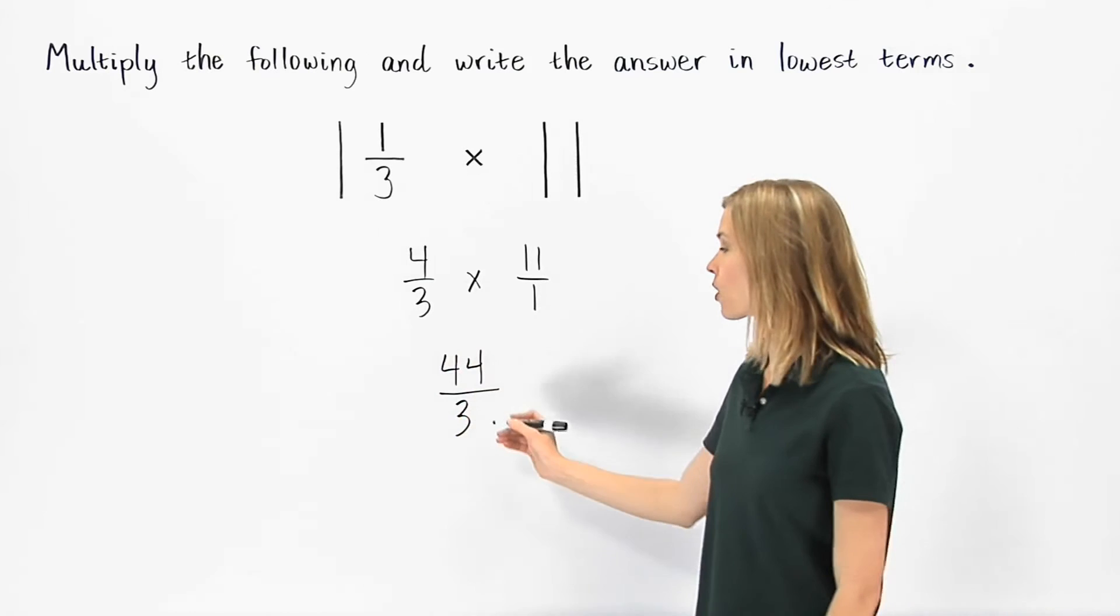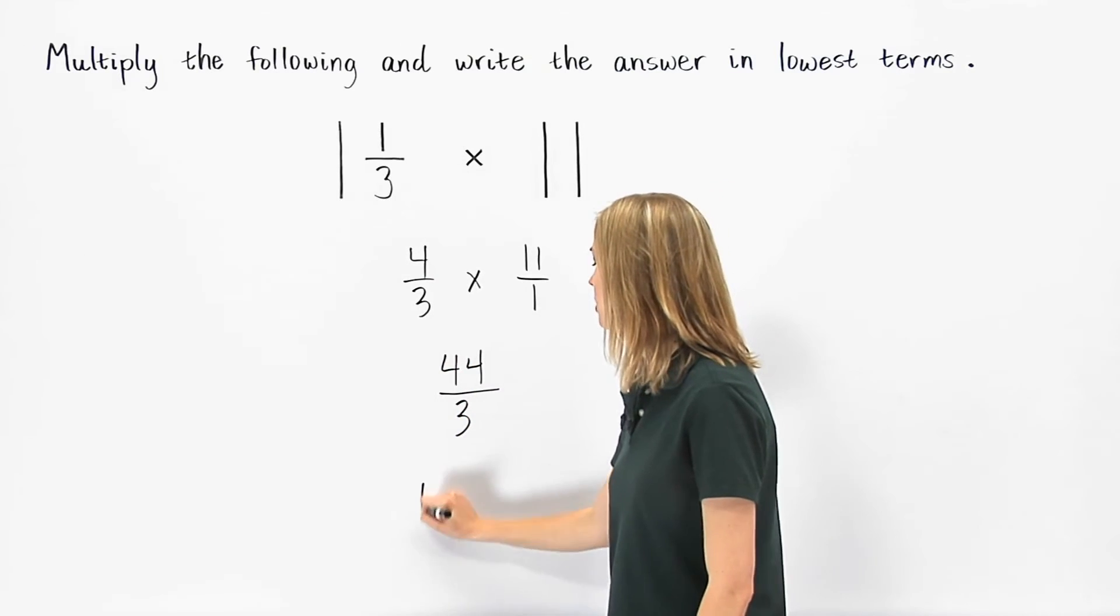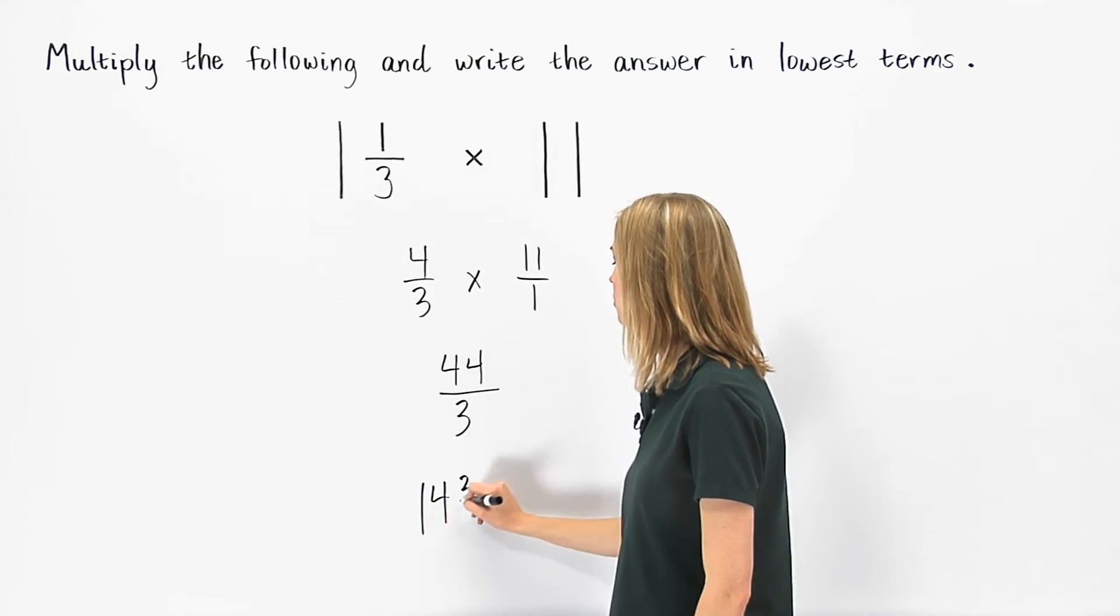Finally, we write 44 thirds as the mixed number, 14 and 2 thirds.